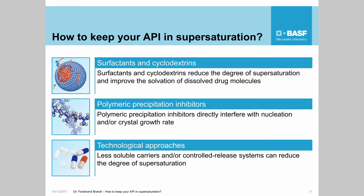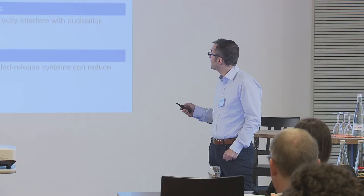So how can we keep our API in supersaturation? We can use surfactants or cyclodextrins to maintain supersaturation. Another possibility is the use of polymeric precipitation inhibitors. And a third way are certain technological approaches.